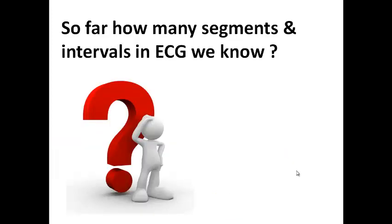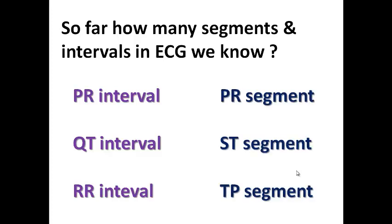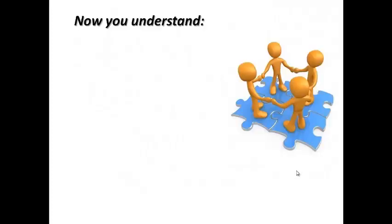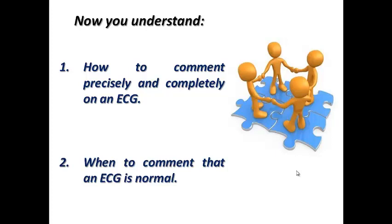In summary, the ECG has three intervals — PR interval, QT interval, and RR interval — and three segments — PR segment, ST segment, and TP segment. PR interval: start of P wave to start of QRS. PR segment: end of P wave to start of QRS. ST segment: end of QRS to start of T wave. QT interval: start of QRS to end of T wave. TP segment: end of T wave to start of P wave. RR interval: between two successive R waves. Today we learned how to comment precisely and completely on an ECG using 11 points — 2 regarding the ECG paper (standardization and speed) and 9 regarding the ECG waves themselves. Thank you very much for your listening.